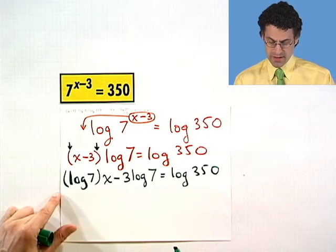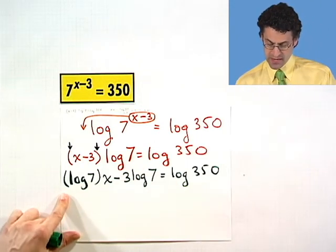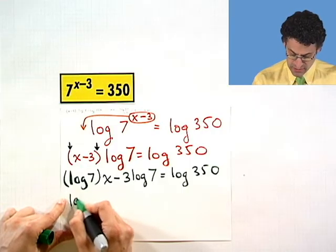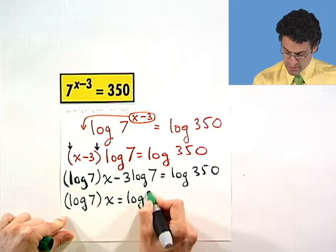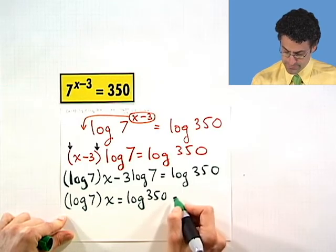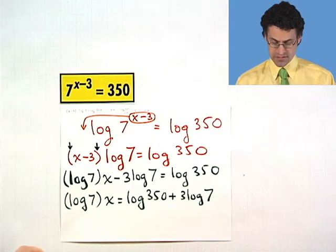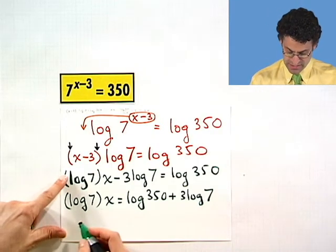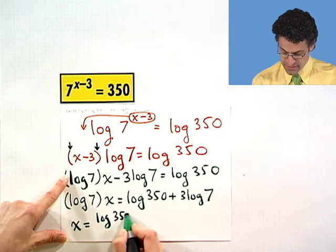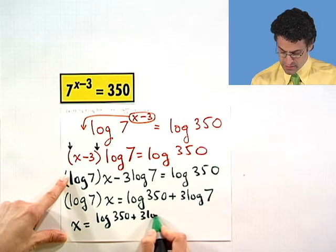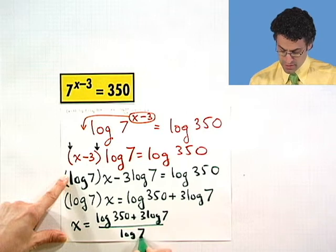And now what can I do? Well, now I can actually bring this term over to the other side by adding it. So I add 3 log 7 to both sides and I see log 7 times x equals log 350 plus 3 log 7. And then finally I can solve this for x by dividing both sides by log 7. And so I see x equals log 350 plus 3 log 7 all divided by log of 7.